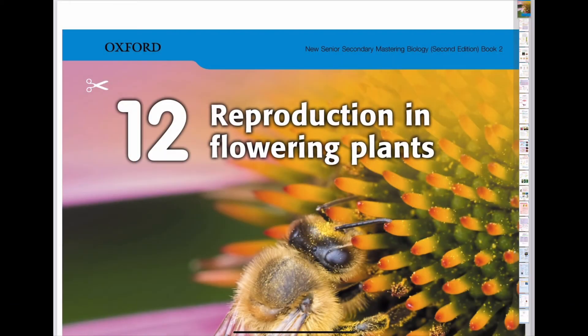Hello everyone, I'm Mr. Leung. In this video we are going to talk about the MC questions or some true or false questions in chapter 12. The topic of chapter 12 is reproduction in flowering plants, but we will also study the different types of reproduction — asexual reproduction, sexual reproduction — and apart from the flowering plants, we shall learn a bit about bacteria.